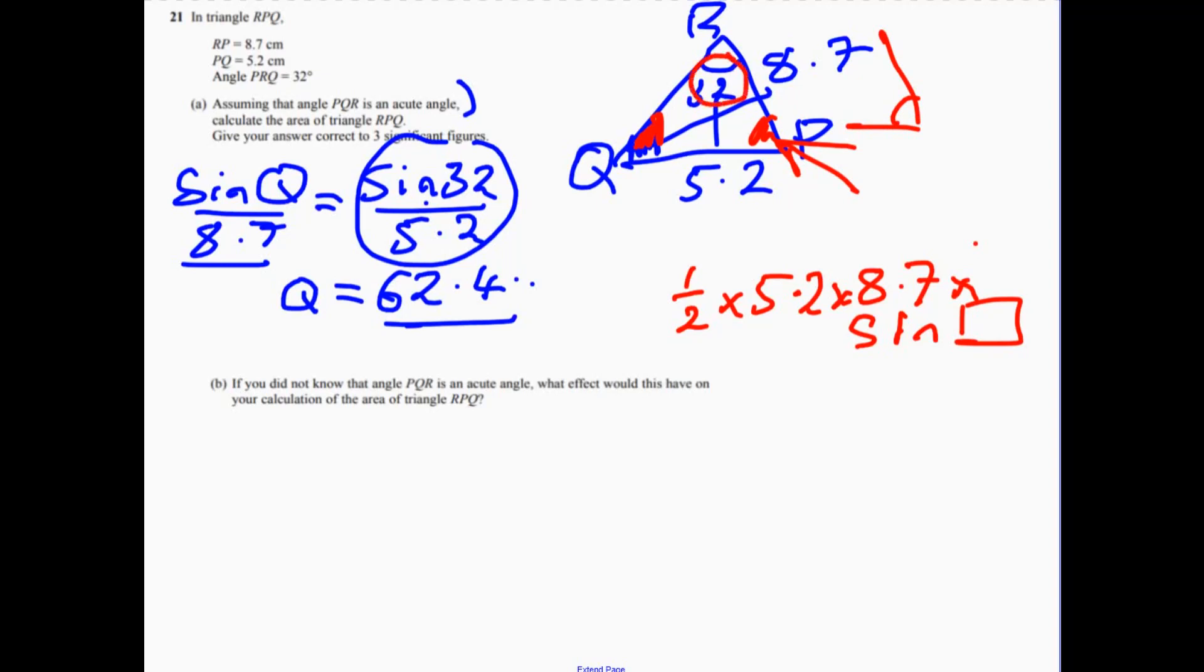OK, well, it's just angles in the triangle. I know this one, and I know this one. Add them up, take them away from 180, and you'll get that this angle is 85.5 and a little bit more.